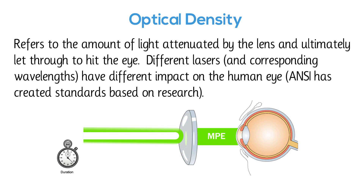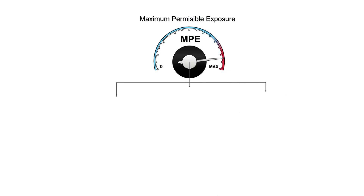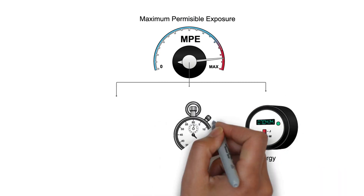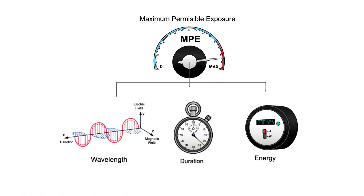The MPE can be thought of as a laser safety speed limit and is a function of the wavelength of the laser, the time duration of exposure, and the energy involved. MPE utilizes the concept of energy density — how much energy over a unit of area is permissible at a particular wavelength without biological harm given a specific time duration.